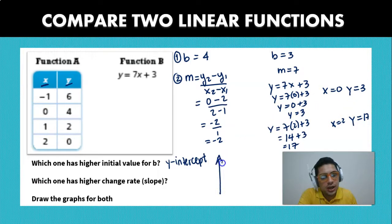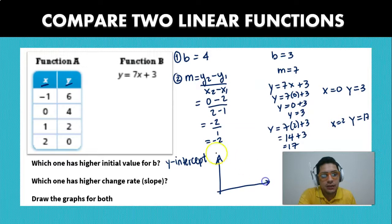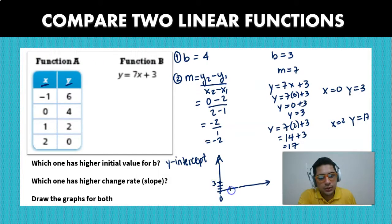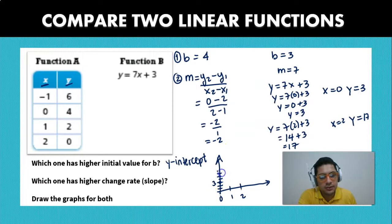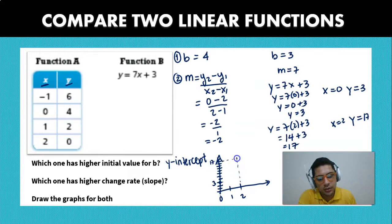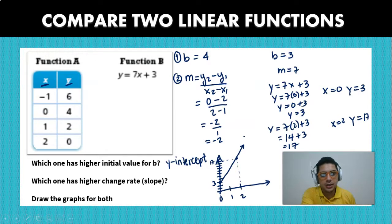So we can also draw that graph. So it's going to be for 0, we have a value of 1, 2, 3. And for a value of x equal to 2, so 1, 2, we have a value of 17, right? Which is going to be around here. And we just know that it's going to be positive. So it's going to be increasing the slope, right?